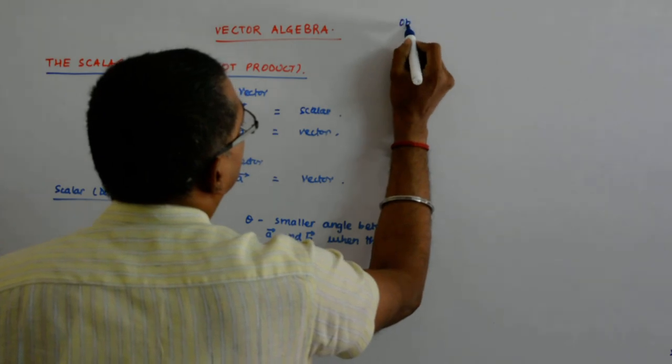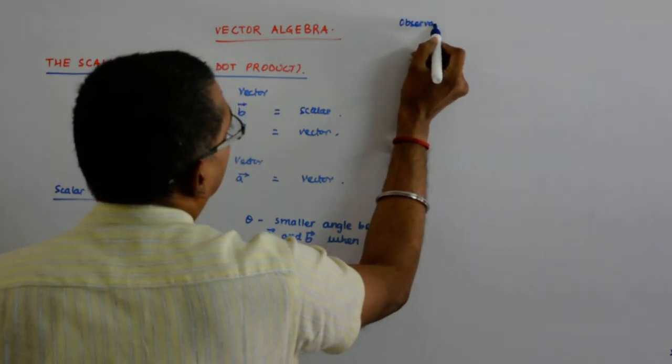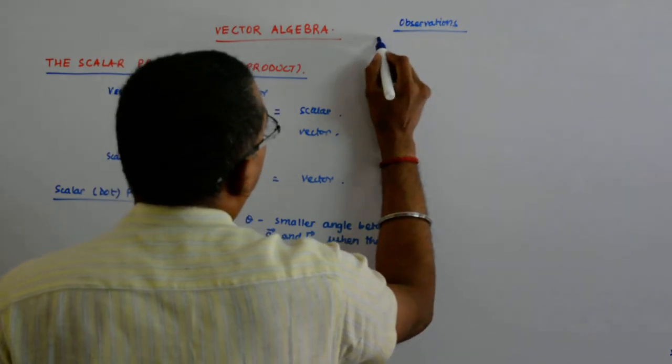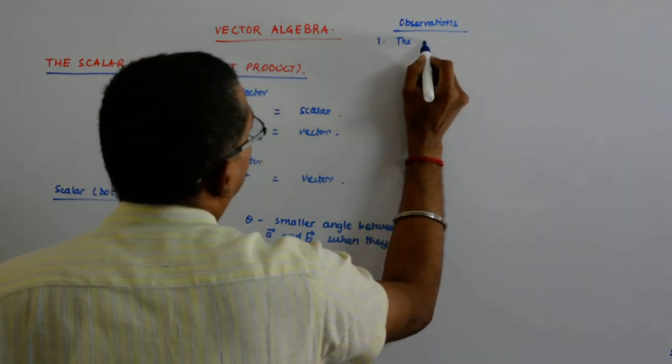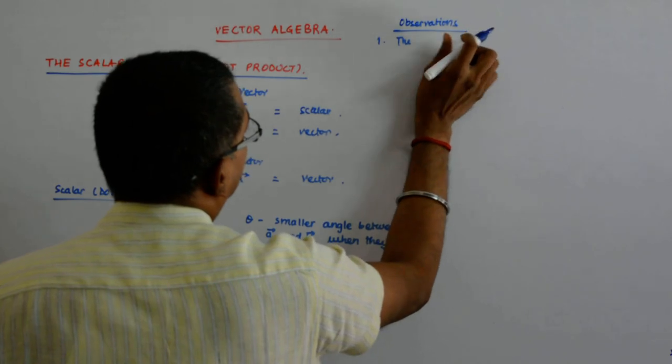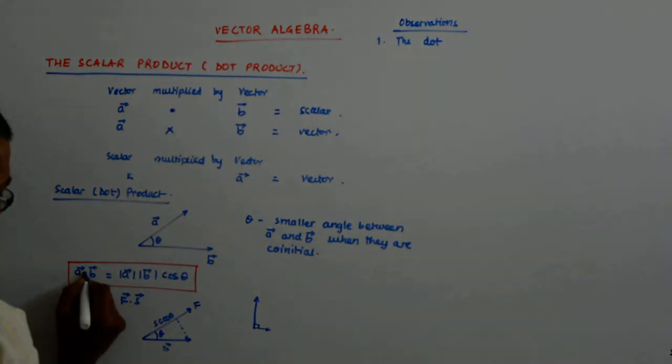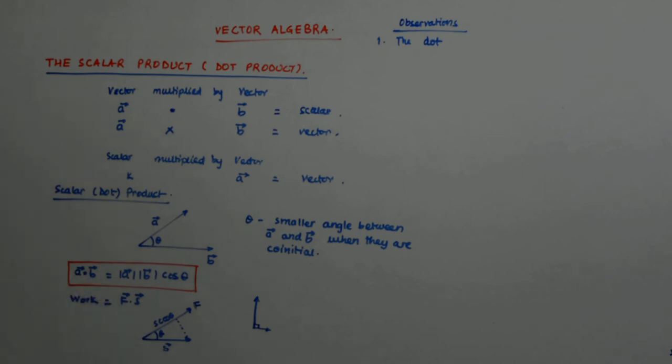So, then there will be no work. So, we can have certain observations about it. The first of them is, and you actually use this dot. This is not out of fun. You actually use this dot there.